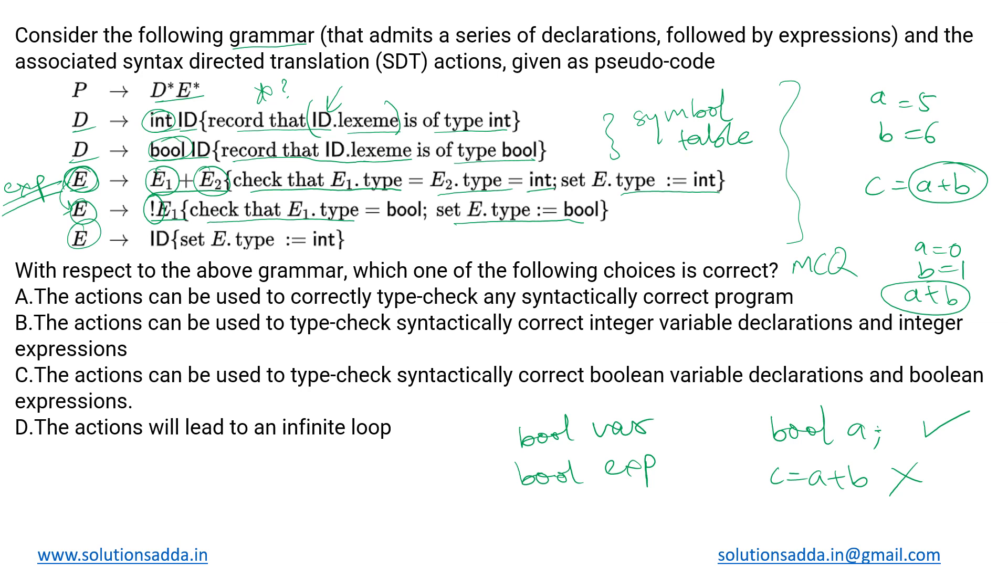Finally, same thing is being done for ID as well: set the type of E as integer because this ID corresponds to something of integer type, so that same type is being assigned to this E as well. So now based upon this, let us see the options and what we got to know from this: if we are having arithmetic expressions of the form equal to E1 plus E2, where both of these are integers, then this particular expression is validated by the grammar. But if they are of boolean type, then it does not. Boolean expressions are not validated, but boolean variables are being checked in this particular line. So let's see. The actions can be used to correctly type check...